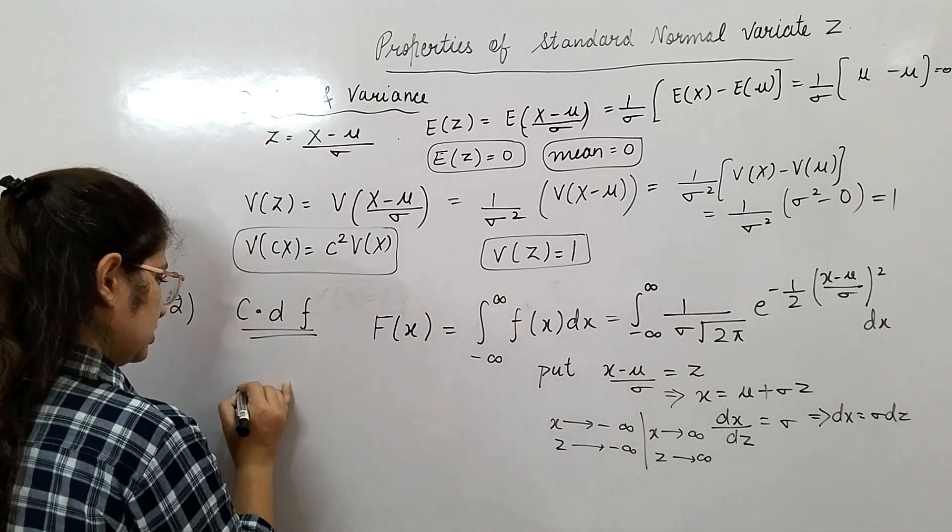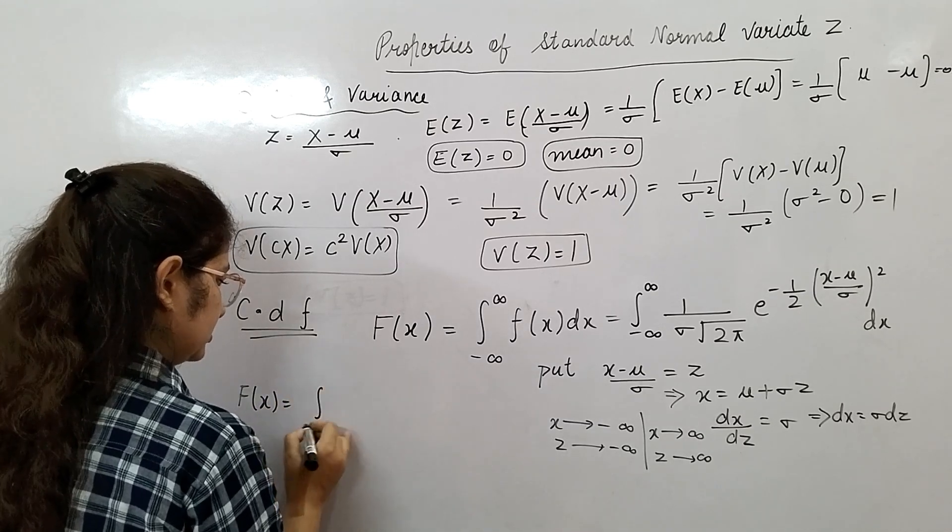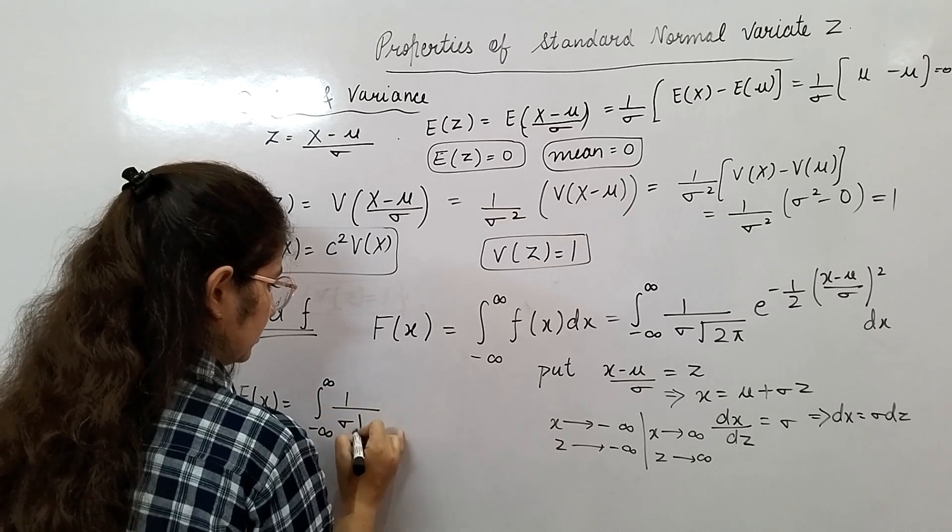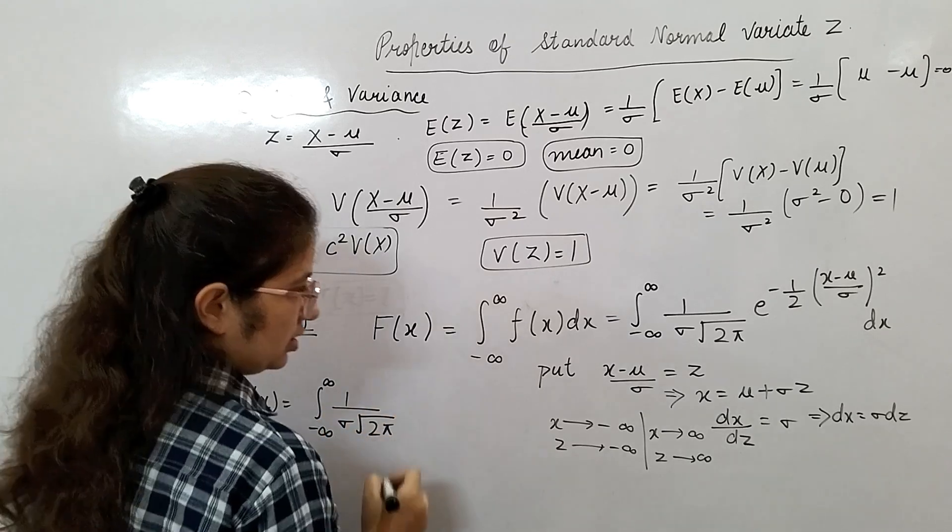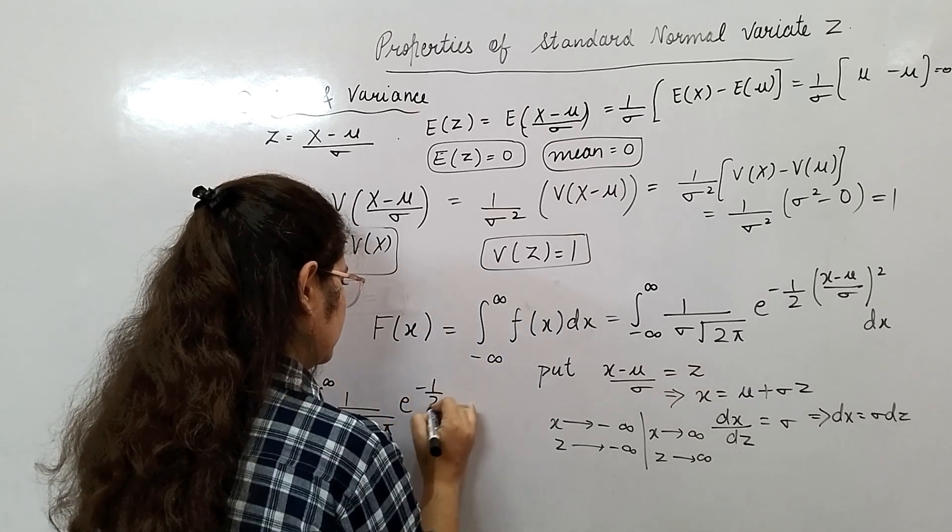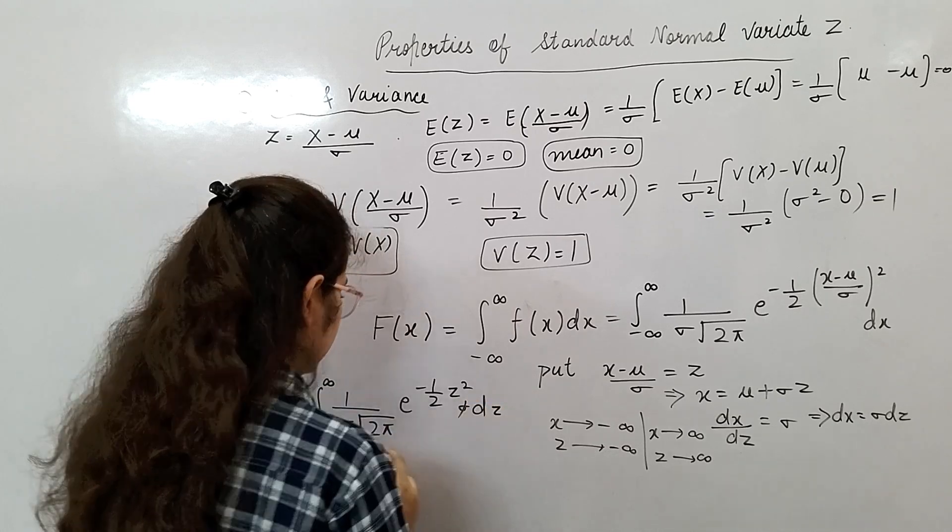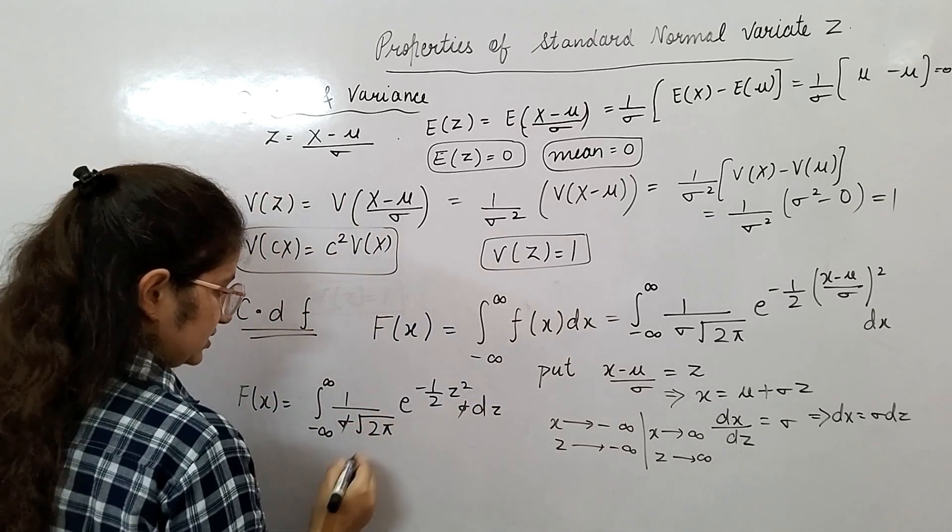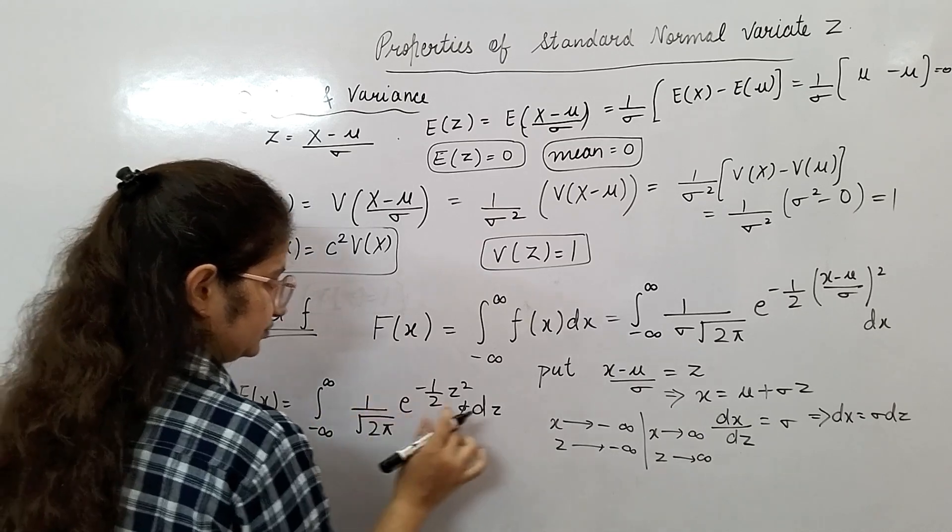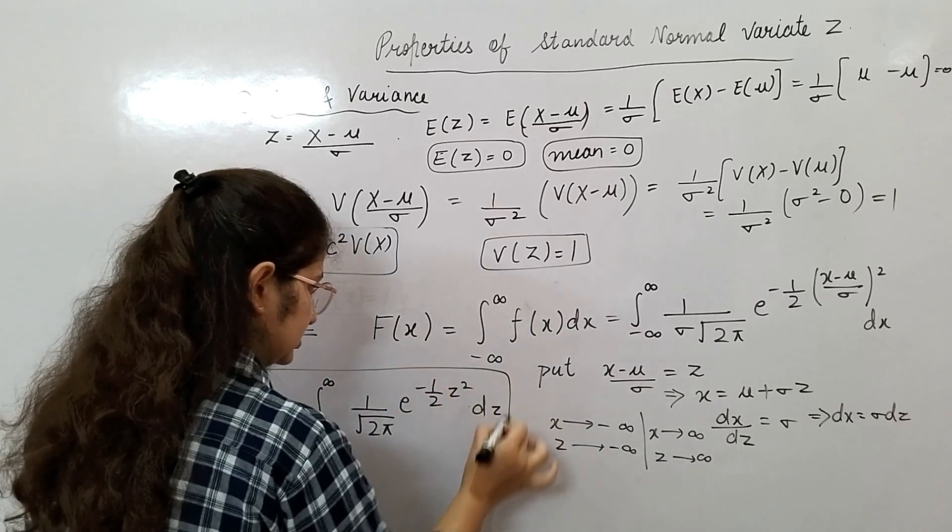From here your F of X function is minus infinity to infinity, 1 upon sigma root 2 pi, e to the minus 1 by 2 Z square sigma dz. This sigma and this sigma will cancel out each other. This will be your CDF value.